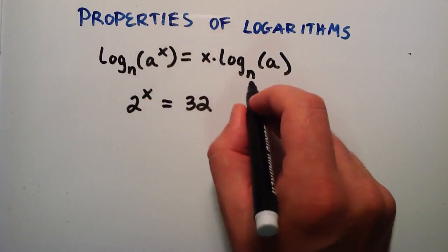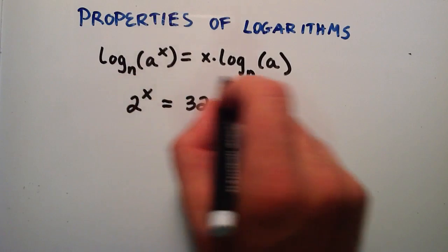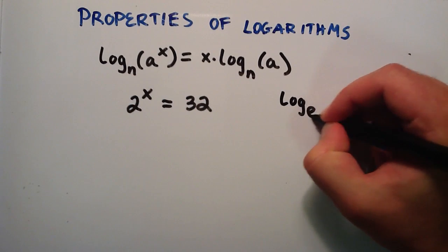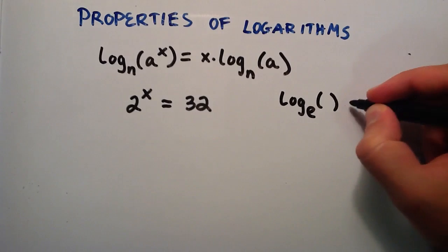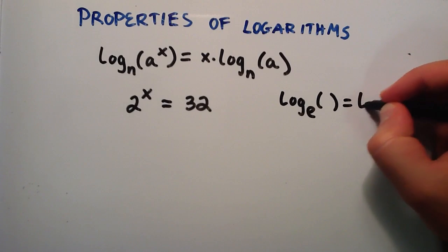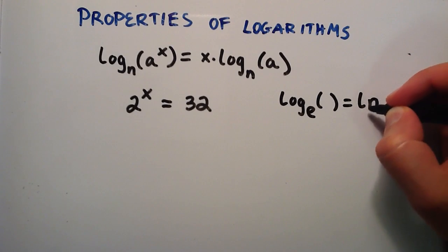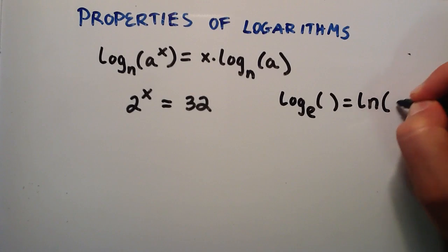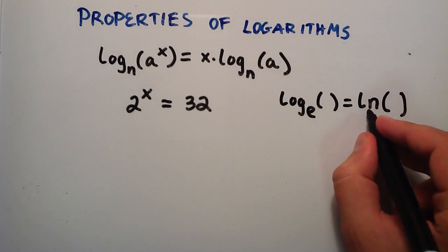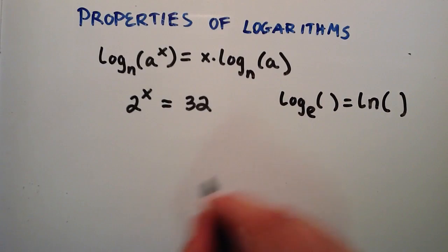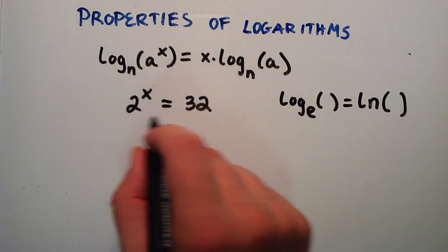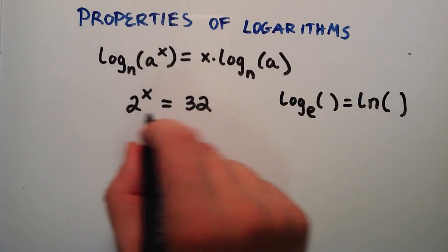We can choose any n for our logarithm. What I'm going to do is choose log base e, and the only reason I'm choosing log base e is because I have a nice button on my calculator, which is ln, or the natural log. The natural log is really just log base e. So I'm going to take the natural log of both sides of this equation.